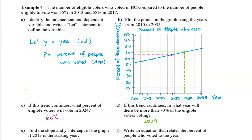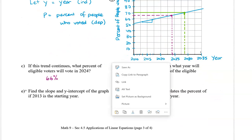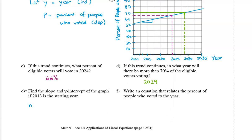Next we're going to find the slope and the y-intercept of the graph if 2013 is the starting year. To make it easy, 2013 is our starting year, which means it will be our y-intercept. For slope, remember it's based on rise over run — we take the difference in the percentages, which is our rise, divided by the difference in the year, which is our run. So our slope is going to be 58 minus 55 percent divided by...